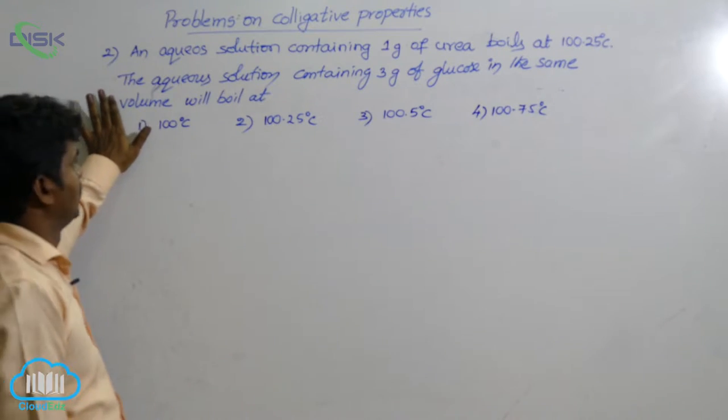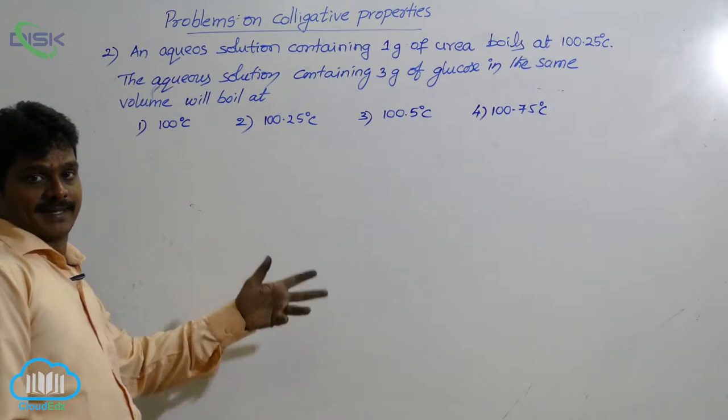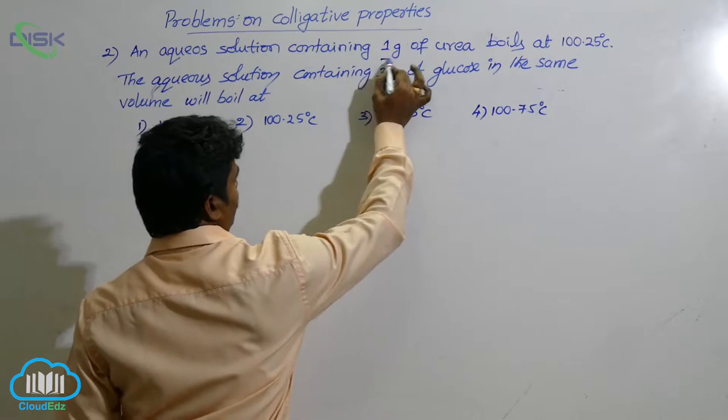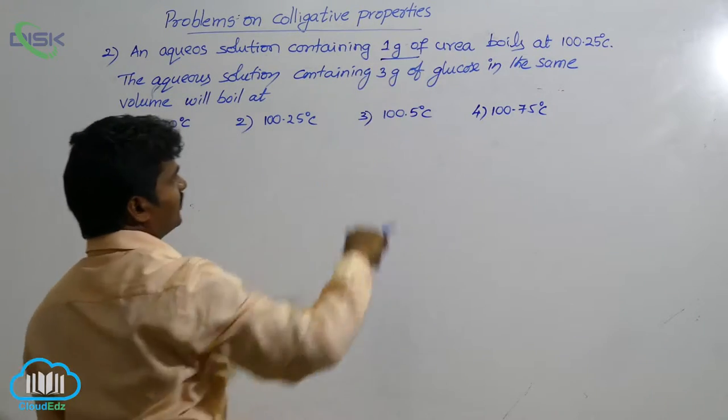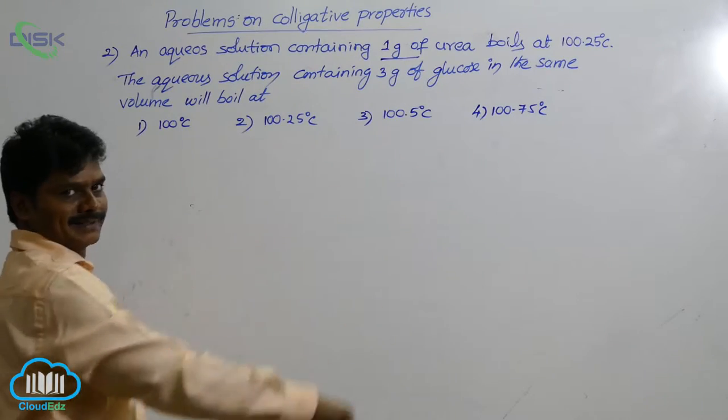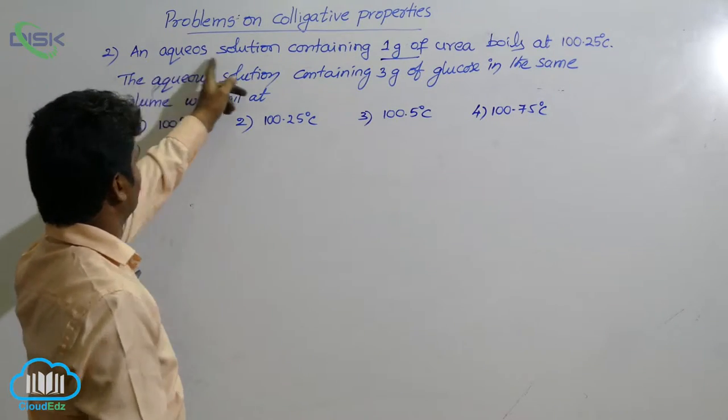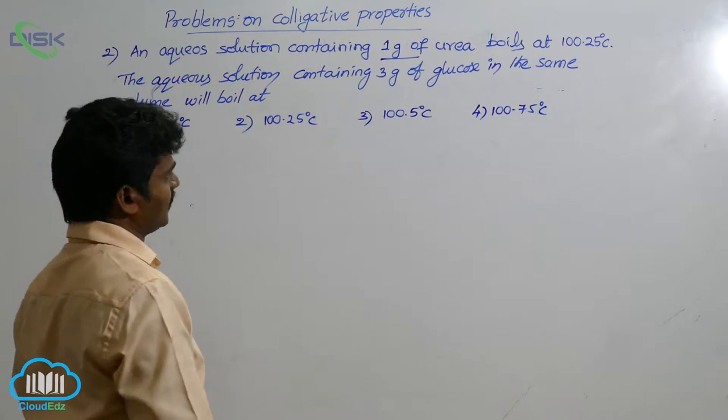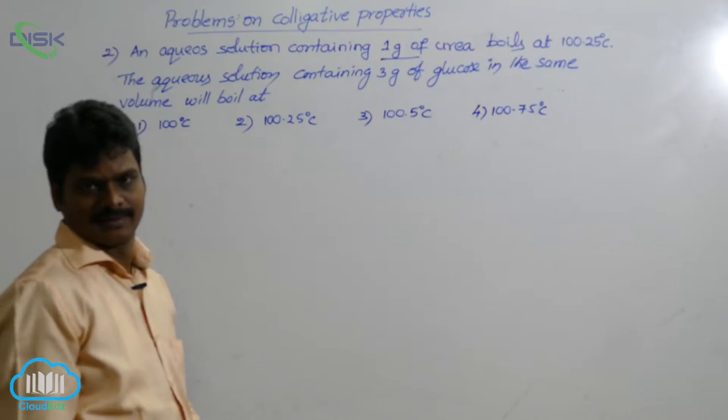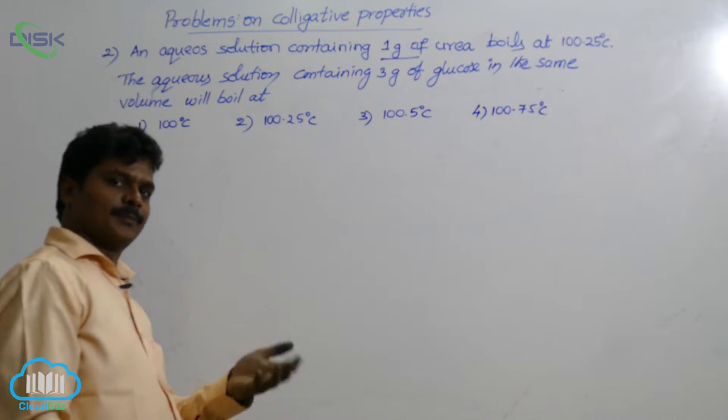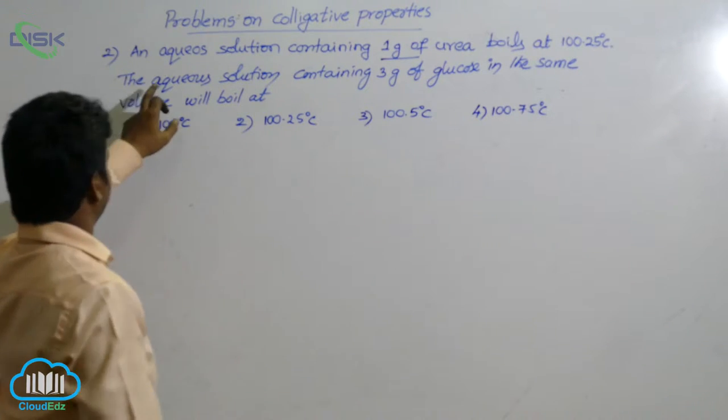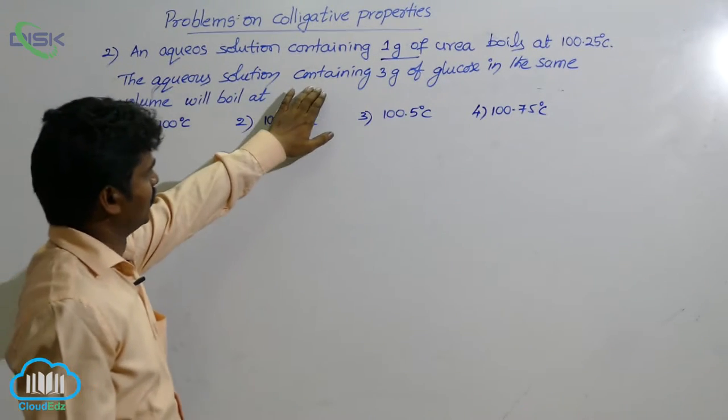See the second problem. This problem is based on elevation in the boiling point of pure solvent. Here the information is given: one gram of solute urea, its boiling point is given. An aqueous solution containing one gram of urea boils at the boiling point of solution given here. The solution is aqueous, so what is the boiling point of pure water? That means T naught, take 100 degree centigrade.